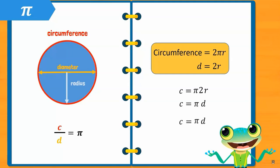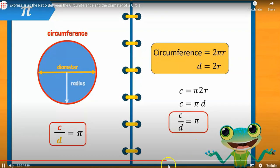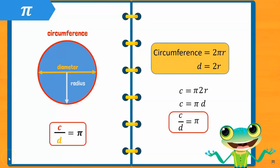Now if we take d to the other side and divide it, we get C over D is equal to pi. This confirms what we have learned today with knowledge that we already had.